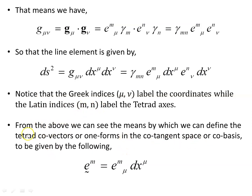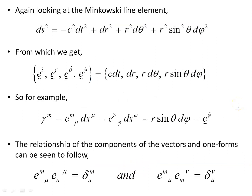From the above we can define the tetrad covectors, or one forms in the cotangent space — the cobasis — with the index m now up top. Looking at the Minkowski line element, we obtain a set of one forms or covectors. The general rule for the covectors in the tetrad gives us, for the phi direction, e3_phi dx_phi, which is e_phi-hat, the covector.